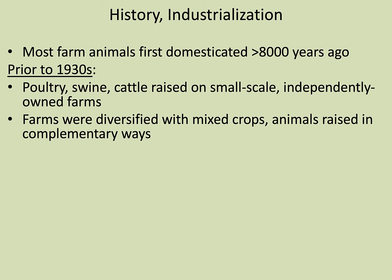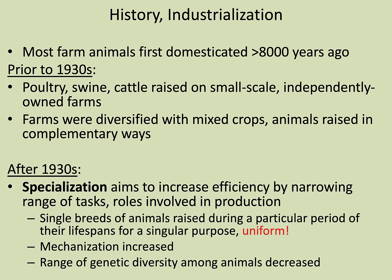The animals worked in complementary ways. Cows would go through an area, and then the chickens would come through and eat the larvae of the bugs in the manure, keeping the insect and fly population down on the farm. They kind of help one another when you actually have them working together. After the 1930s, specialization aimed at increasing efficiency by narrowing the range of tasks involved in production.